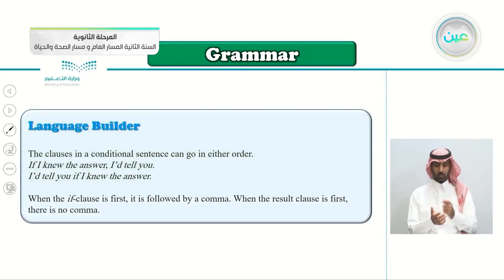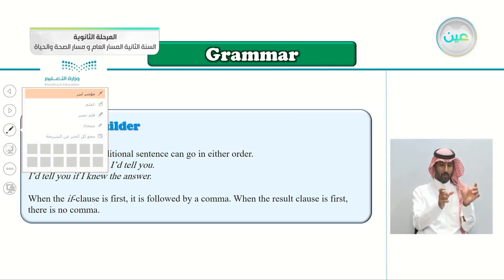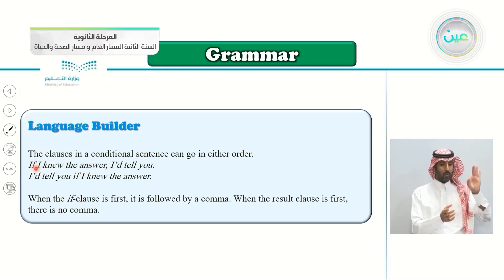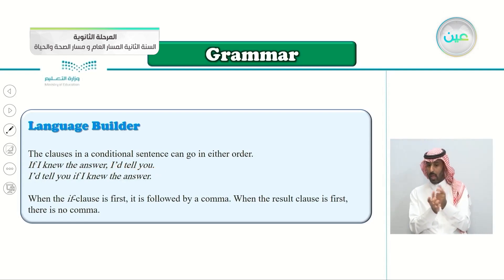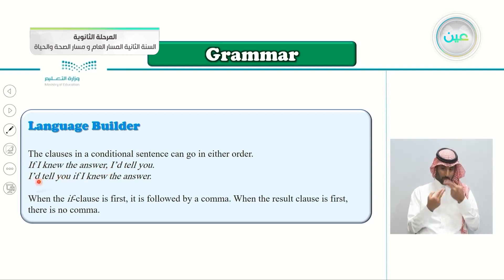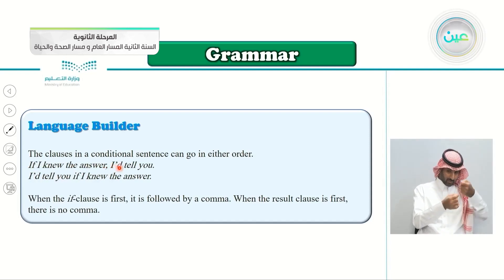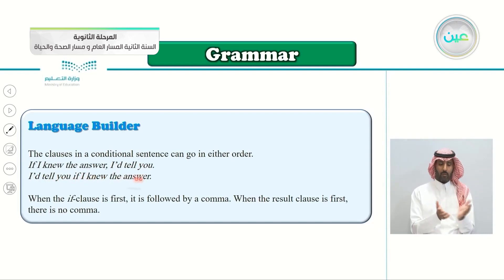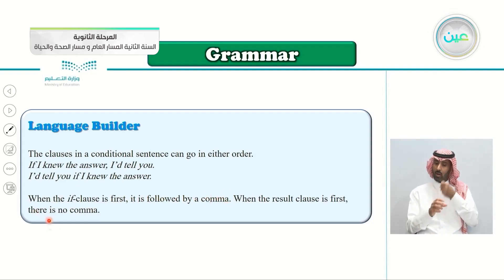Here's a language builder: the clauses in a conditional sentence can go in either order. For example: 'If I knew the answer, I would tell you' — or you can say: 'I would tell you if I knew the answer.' If you begin with the if clause, put a comma after it, then continue with the main clause. If you begin with the result clause, there is no comma.